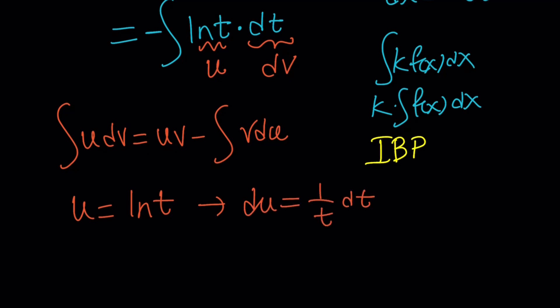DU is going to be the derivative, which is 1 over t dt, right? And then with DV equals dt, then we're just going to integrate both sides. And that's going to give us V equals t.